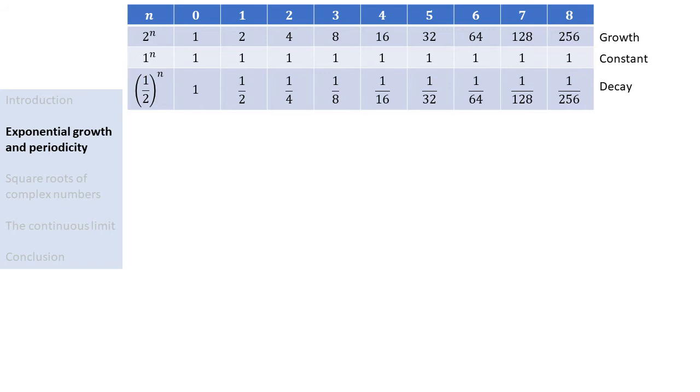Now what will happen if we raise a negative number to the power n? For n equals 0, we get 1. Multiplying this with minus 1 gives minus 1. Multiplying with minus 1 again gives 1. Then we get minus 1, 1, minus 1, etc. So we see that the sequence is not growing, constant or decaying, but rather it starts oscillating. More specifically, the sequence is periodic with period 2.